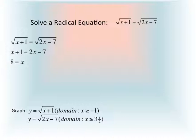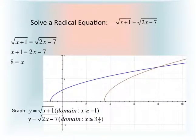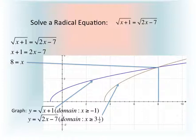When we plot both of these graphs together, the point of intersection should agree with our solution. The graph shows y equals the square root of x plus 1 as the purple curve, and y equals the square root of 2x minus 7 as the brown curve. We can see that these two curves are intersecting where x equals 8, giving us visual confirmation of our solution.